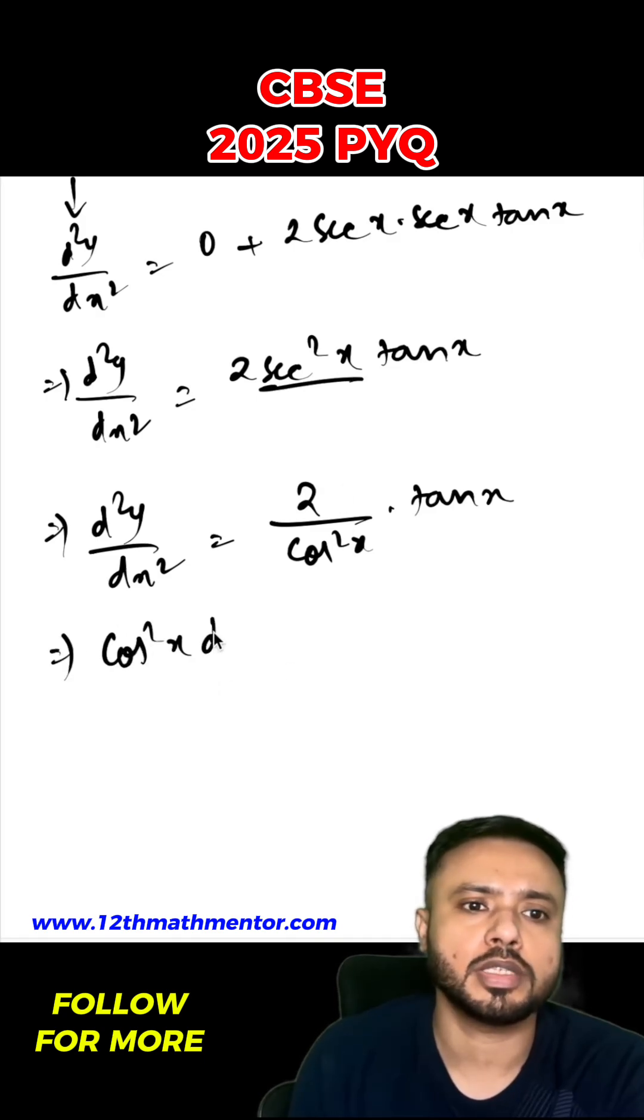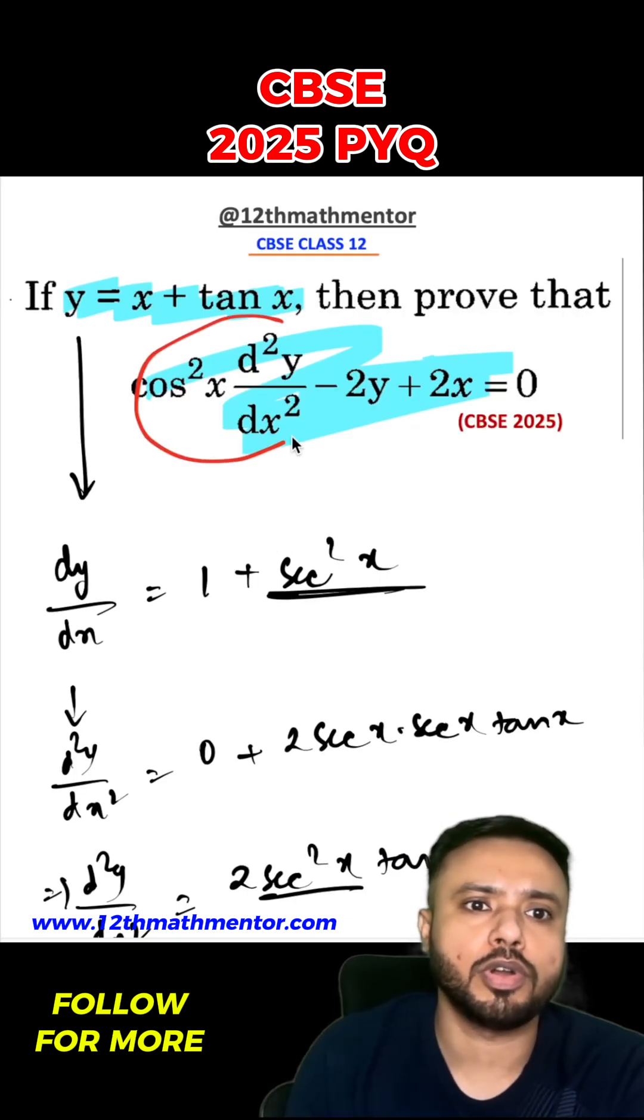So I can write it as cos²x d²y/dx² equals 2 tan x. You can see that this part of the proof we already got.